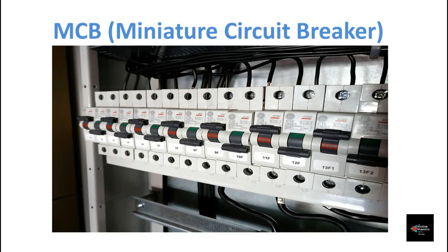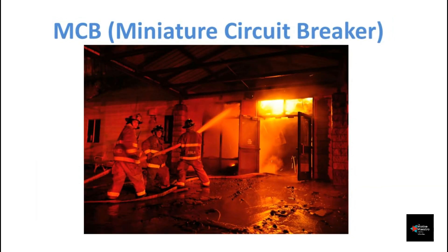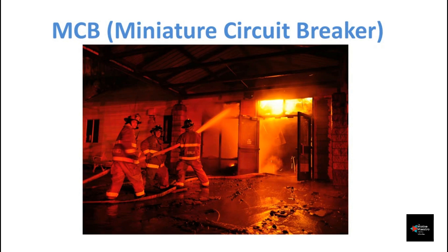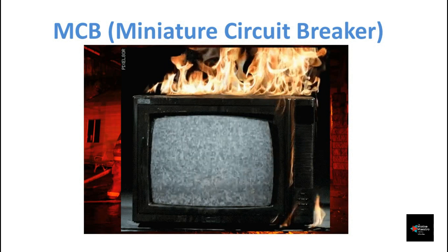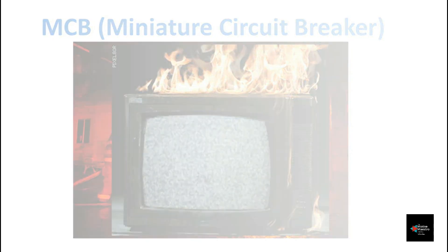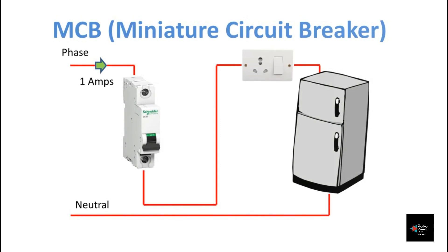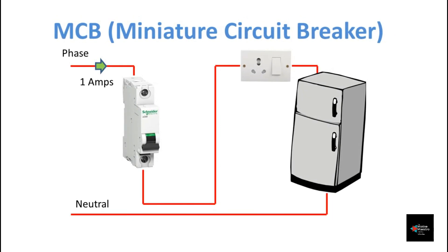If unnoticed, these failures can lead to fire or equipment failures. Compared to fuses, MCB are better in giving protection and functionality. Now let us see how MCB is installed in our houses and how it protects the electrical appliances from overcurrent and short circuit. For your understanding, I have shown a simple circuit with MCB in line.